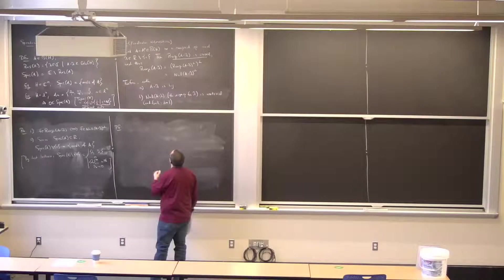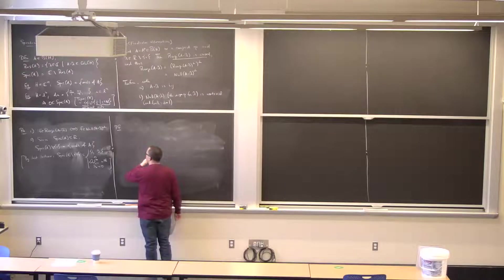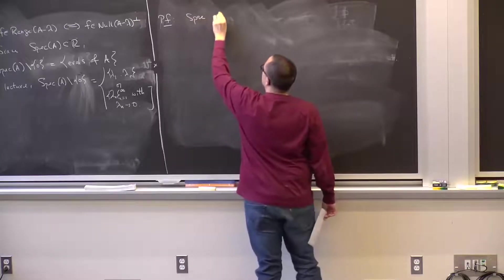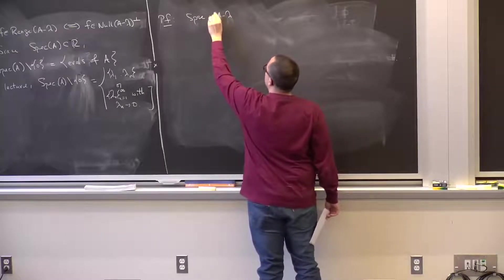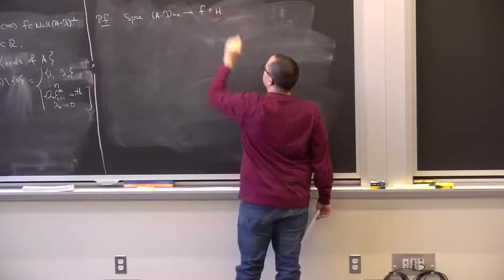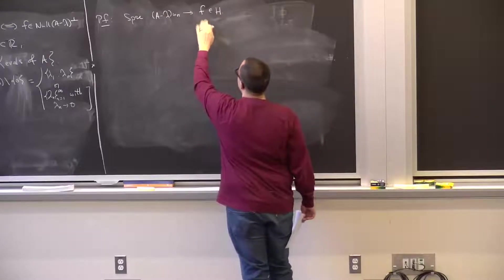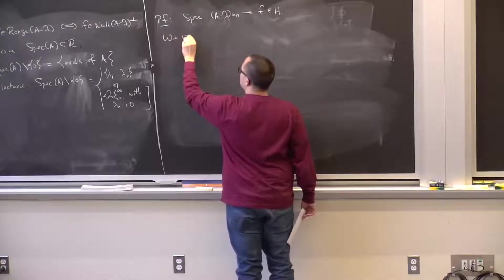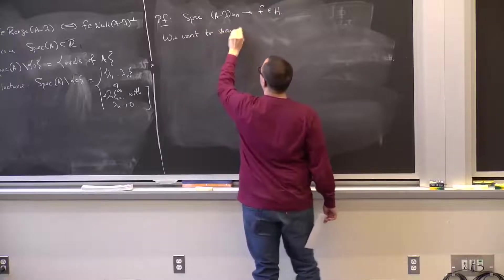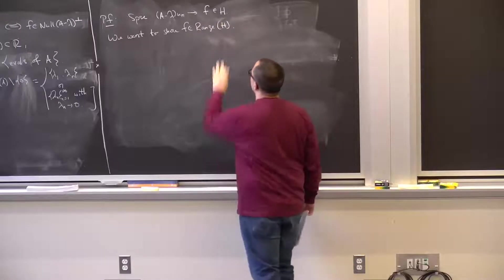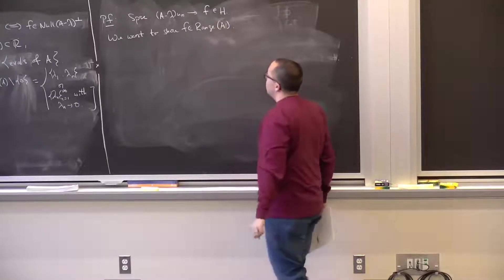The main conclusion of the theorem is that the range of A minus λ is closed. We need to prove this. Suppose we have a sequence A minus λ times uₙ converging to some element f in H. We want to show that f is in the range of A minus λ.